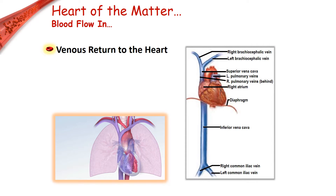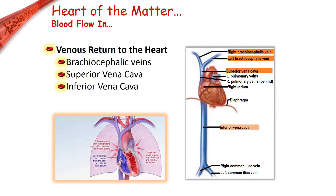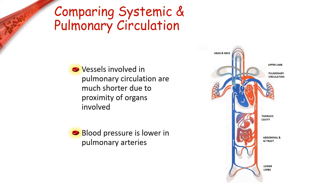A red blood cell's journey ultimately returns to the right atrium to be reoxygenated by the lungs. The main structures that return blood to the heart are the brachiocephalic veins, the superior vena cava, the inferior vena cava, and the pulmonary veins, which ultimately return oxygenated blood back to the heart from the lungs. Compared to systemic circulation, the vessels that make up the pulmonary circuit are relatively short. Blood doesn't need to be pumped as far during pulmonary circulation because the lungs are so close to the heart. In addition, the pulmonary arteries have less elastic connective tissue and wider lumens than systemic arteries, and as a result, blood pressure is lower in the pulmonary arteries than in the systemic arteries.